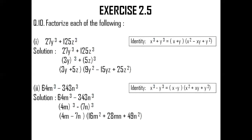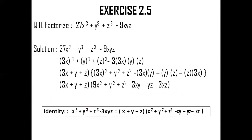Let me take you to question number 11. Here, we have an altogether new identity applied. The identity used to solve question number 11 is: x cube plus y cube plus z cube minus 3xyz is equal to x plus y plus z into x square plus y square plus z square minus xy minus yz minus zx. The question that we have is very similar to the left hand side of the identity — 27x cube plus y cube plus z cube minus 9xyz.